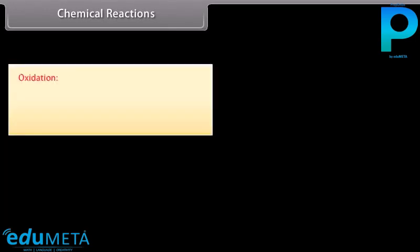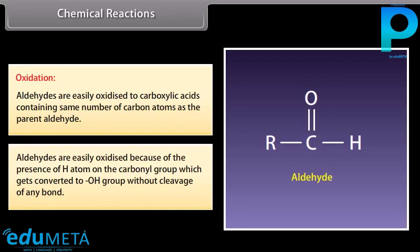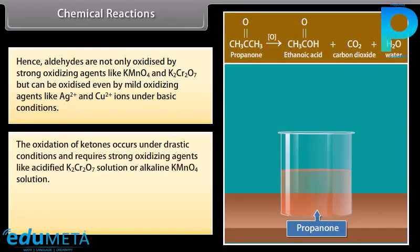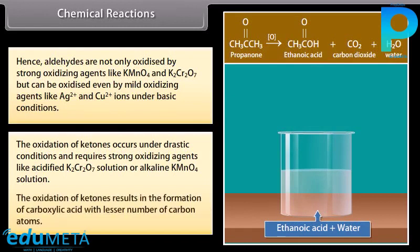Oxidation: aldehydes are easily oxidized to carboxylic acids containing the same number of carbon atoms as the parent aldehyde. Aldehydes are easily oxidized because of the presence of a hydrogen atom on the carbonyl group, which gets converted to an OH group without cleavage of any bond. Hence, aldehydes are not only oxidized by strong oxidizing agents like potassium permanganate and potassium dichromate, but can also be oxidized by mild oxidizing agents like Ag2+ and Cu2+ ions under basic conditions. The oxidation of ketones occurs under drastic conditions using strong oxidizing agents like acidified potassium dichromate or alkaline potassium permanganate, and results in the formation of carboxylic acids with a lesser number of carbon atoms.